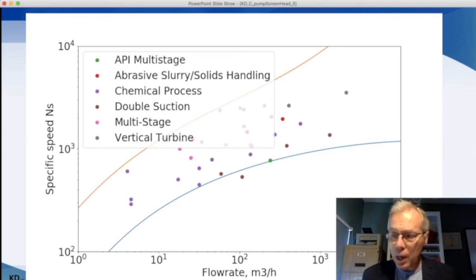All that we need to do now is select different combinations of pump speed and the number of stages and see where they fall on this map of specific speed and flow rate. I use Python for these calculations. You could use a spreadsheet.